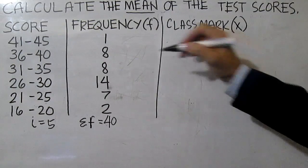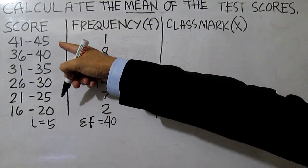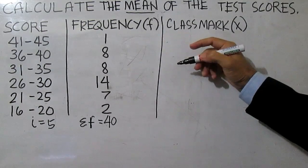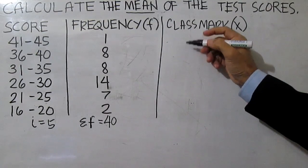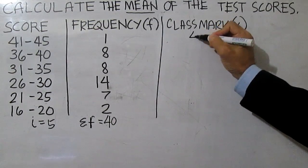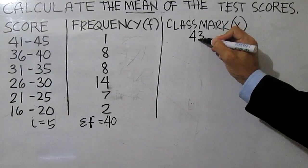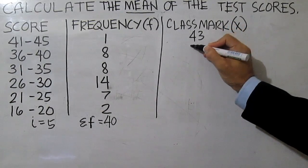So for 41 to 45, 41 plus 45 divided by 2 is 43. 36 plus 40 divided by 2 is 38. 31 plus 35 divided by 2 is 33.